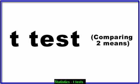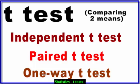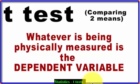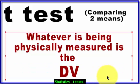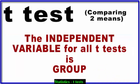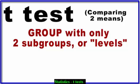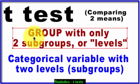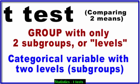Here are a few important add-ons about t-tests — all three of them: independent, paired, and one-way. Whatever is being physically measured is the dependent variable, or DV. The independent variable, or IV, for all t-tests is group. With t-tests you only have two groups — two subgroups. So the IV is group with two levels or subgroups under the categorical variable called group. It's a categorical variable with only two possible subgroups.